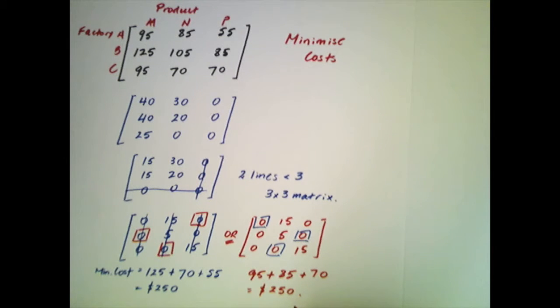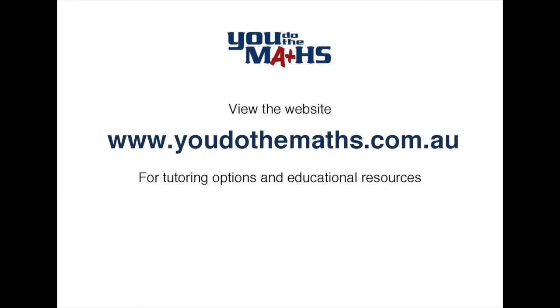Now that's the same as the first amount we got so there are two options here as far as minimum cost goes. One option is to allocate Product P to Factory A, Product M to Factory B and Product N to Factory C. Or what we could also do is allocate Product M to Factory A, Product P to Factory B and Product N to Factory C. Either way both of these methods arrive at a minimum cost of $250.